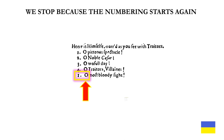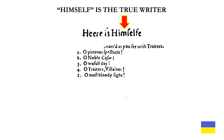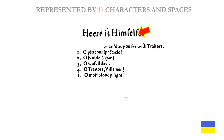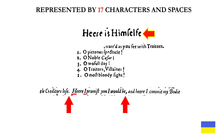We stop because the numbering system starts again, back with number 1. Remember also that himself is the true writer. He is represented by 17 characters and spaces. This is exactly the same type of puzzle arrangement that we saw in 'Here I Promised You I Would Be,' in which the text will give you a clue as to who the narrator is.